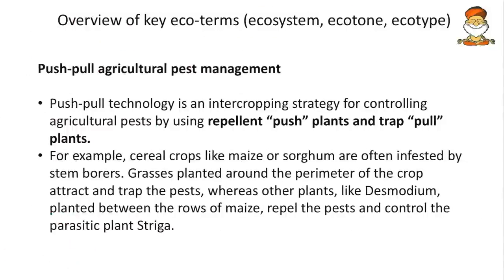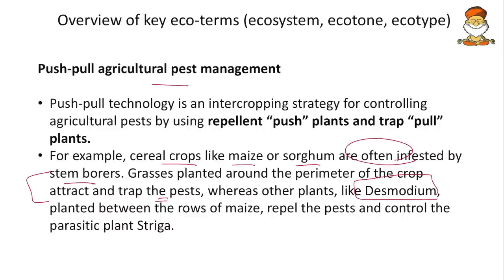Push and pull agricultural pest management uses push crops and pull crops. Push crops repel microorganisms; pull crops absorb them. For example, BT cotton is a push crop that repels bollworms. Cereal crops like maize or sorghum are often infested by stem borers — these are pull crops for stem borers. Grasses planted around the perimeter attract and trap pests. The Desmodium plant acts as a pusher, repelling pathogens from crops.